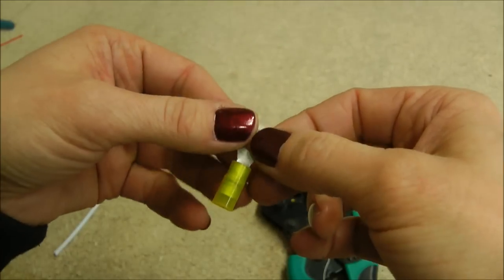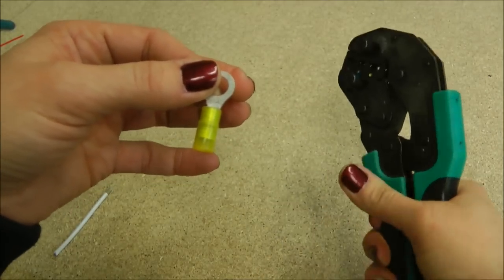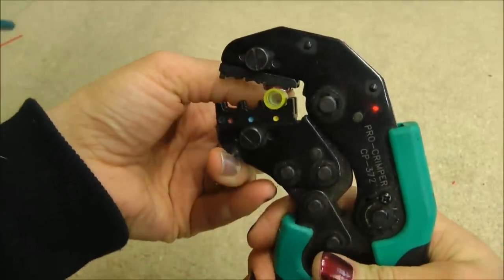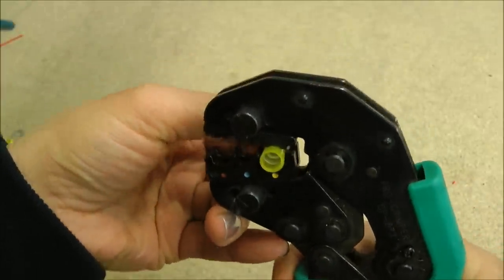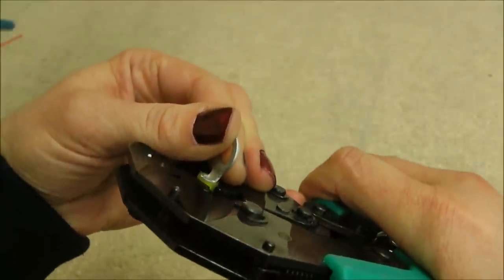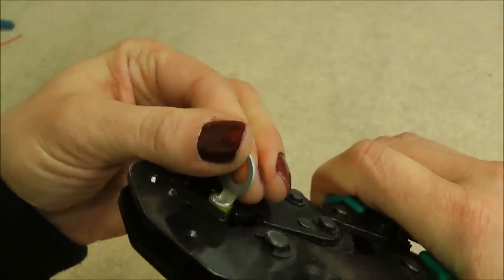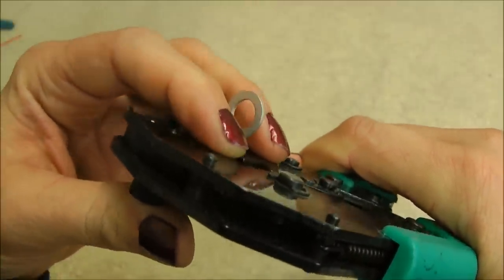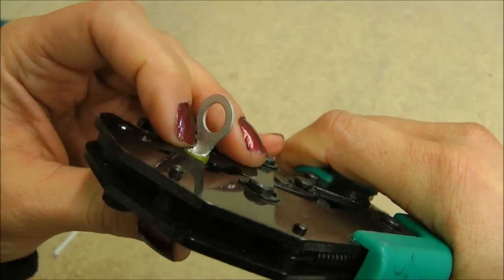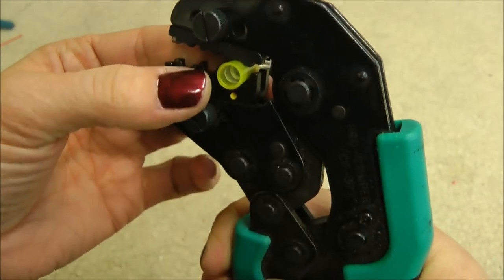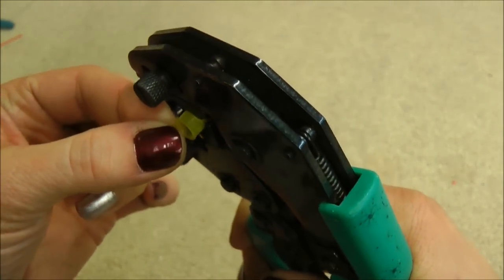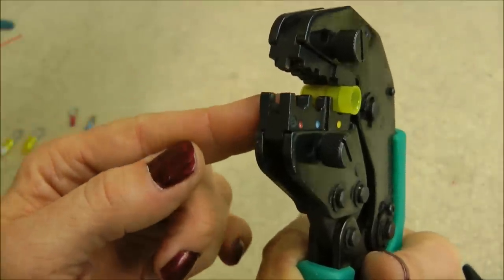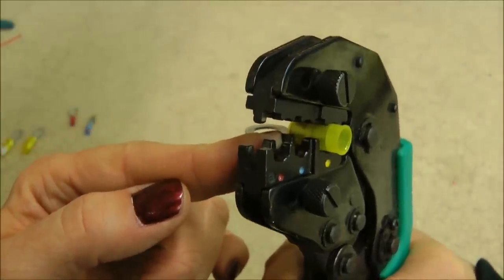I'll show you how to line up the terminal in the crimper and place it in the jaw that's appropriate for the size terminal that you have, this one being yellow, and put it in the yellow space. The back side here you want to make sure that it's lined up flush, that you just have a little bit of the barrel showing out the back side. Out the front you'll see just the plastic part of the barrel showing and that the whole metal barrel is completely inside the jaw and that's what you want.